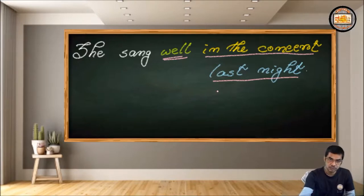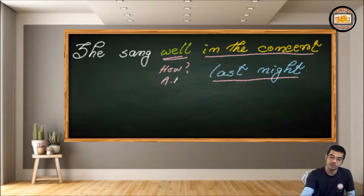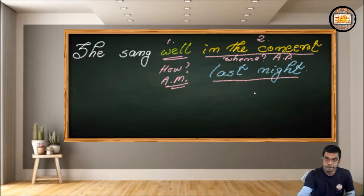How did she sing? So the answer will be well. So it answers the question how. That means well is adverb of manner. So first we have put adverb of manner. Where? So the answer is in the concert. So this is adverb of place. So in the second position, we have placed adverb of place. And then when. That would be the next question for us to ask the word sang when. The answer is last night. That means this is the adverb of time.